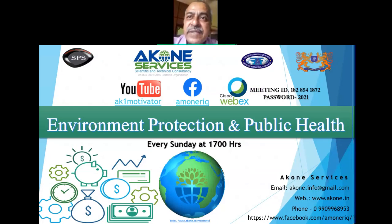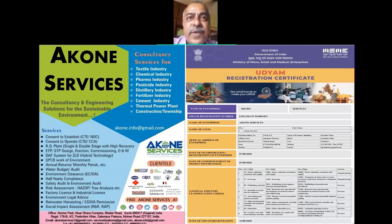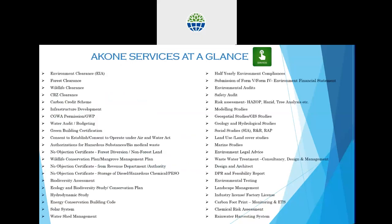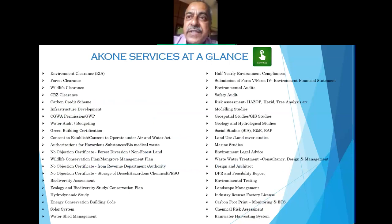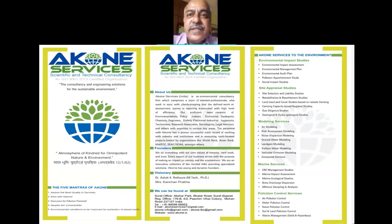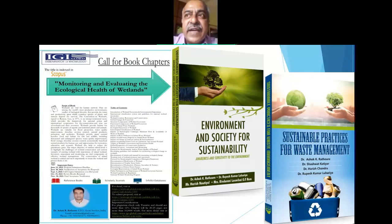Dr. Tripathi is a principal scientist at the Central Institute of Agriculture Engineering, Bhopal. Food wastage occurs along the entire food chain, from field to table. As much as it is an ethical issue, it also leads to economic losses and has a negative impact on the environment. Food wastage is therefore considered a significant problem for modern society, and the first step in solving it is to identify and understand the reasons for its emergence in each part of the food chain and various specific sectors.